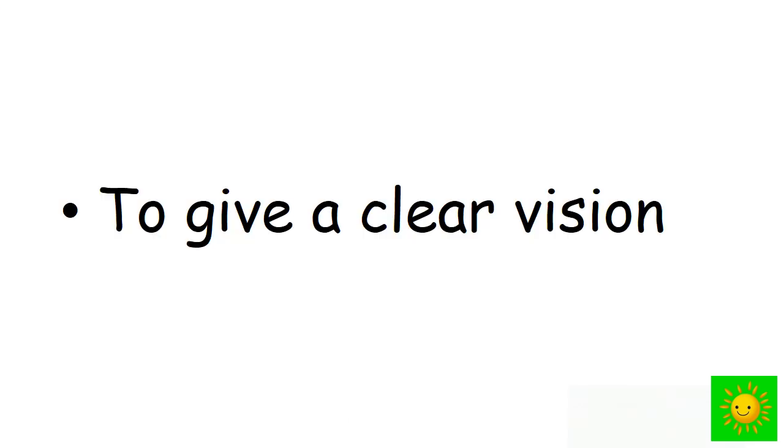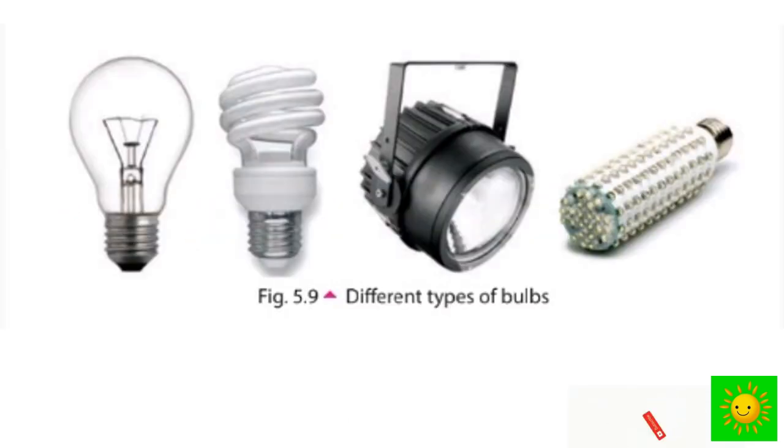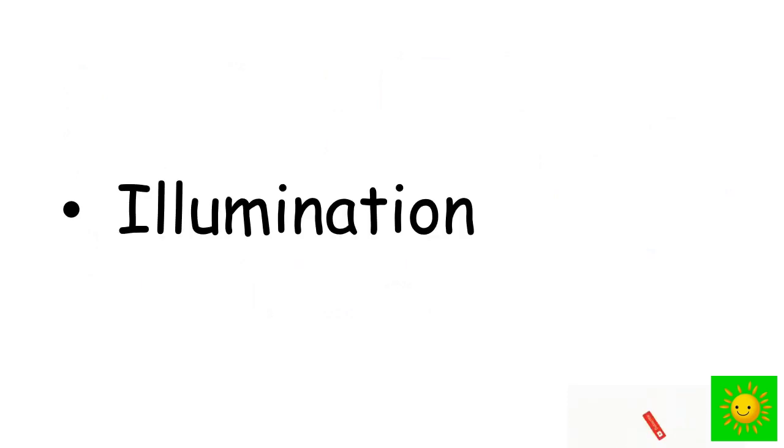To give clear vision: Earlier people received light from natural objects such as the sun, moon, and stars. But after the invention of fire, man was able to produce light from various sources. With the development of technology, the light bulb was invented to get light. Today there are many types of bulbs in the market. You can see different types of bulbs in this picture.